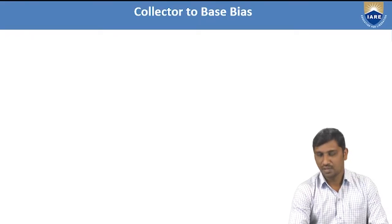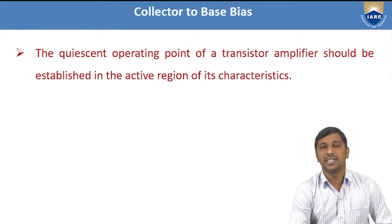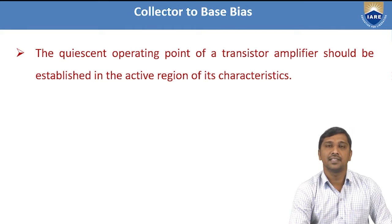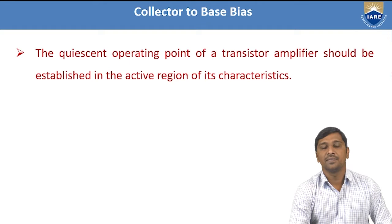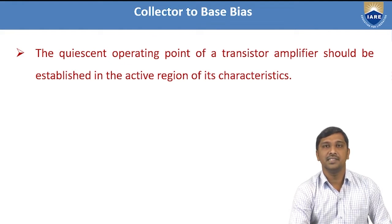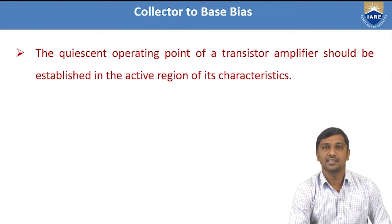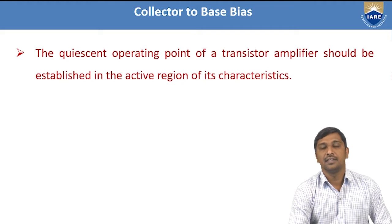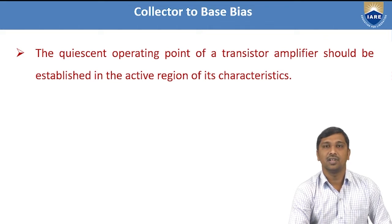Due to temperature, parameters like beta (the current gain), the reverse saturation current, and the input biasing voltage between the input terminal and the common terminal are affected. In a common emitter configuration, the biasing voltage between base and emitter is affected. These three parameters — current gain, reverse saturation current, and VBE — affect the change in collector current. If the collector current changes, the Q-point also changes, shifting towards the saturation or cutoff region.